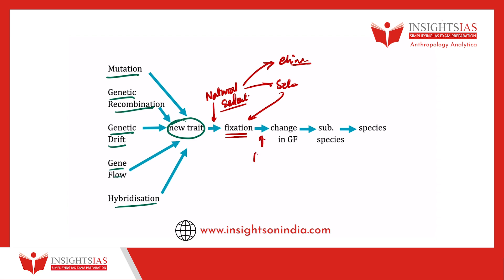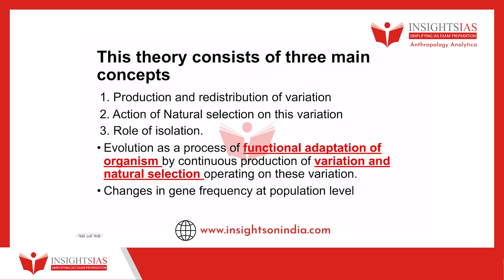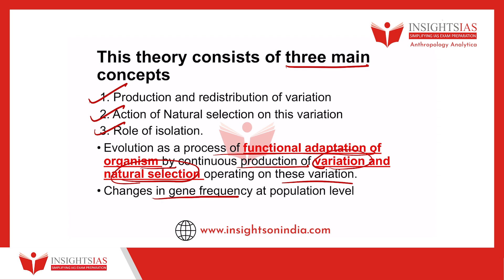These fixed genes are then acted upon by isolation — initially geographical isolation and later reproductive isolation. When species get isolated geographically and exposed to new environmental factors, there is further change in gene frequency, leading to reproductive isolation and ultimately the formation of new species. Evolution can thus be defined as a process of functional adaptation of organisms by continuous production of variation, upon which natural selection acts, leading to change in gene frequency at the population level and ultimately to the formation of new species. This is the essence of Synthetic Theory.